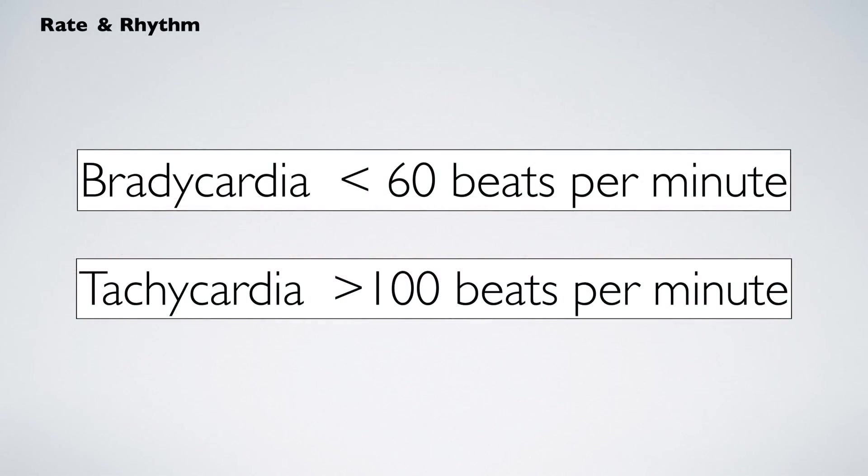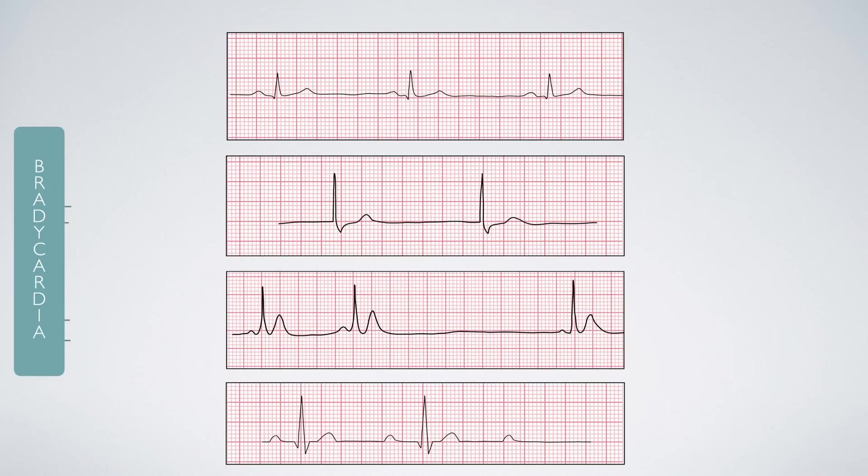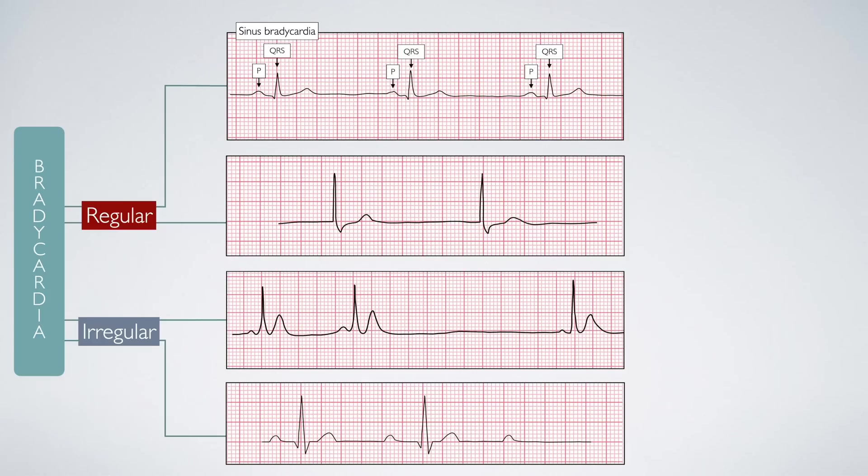Let's take a look at some of the bradycardias and tachycardias. We'll start with the bradycardias. All bradycardias will have a rate of less than 60 beats per minute. They can be divided into regular and irregular rhythms, but there are subtle features that help determine the underlying diagnosis. If the rhythm is regular, P-waves are positive and a single P-wave precedes each QRS complex, this is sinus bradycardia.